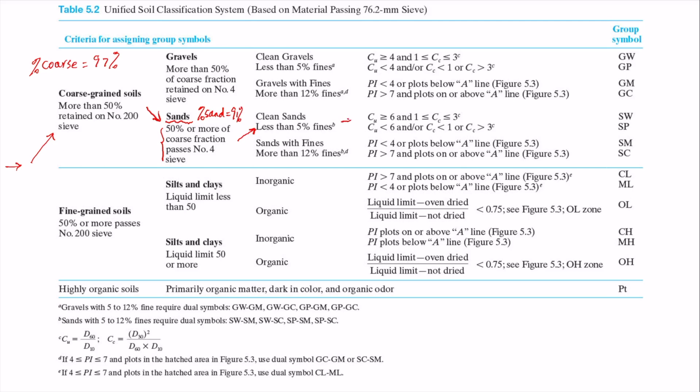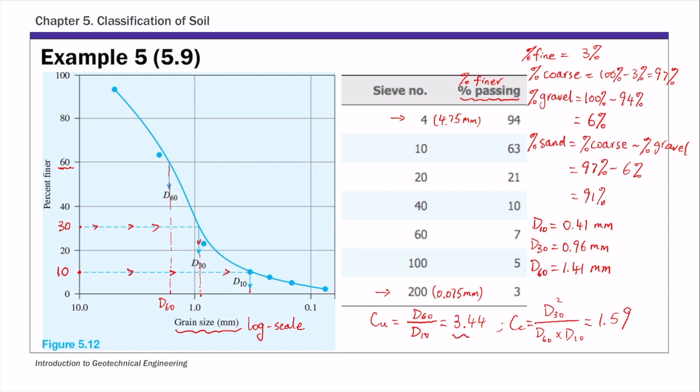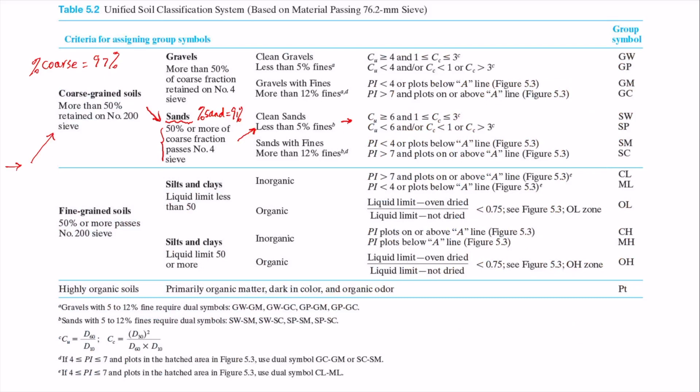And next is those two coefficients, Cu and Cc. For this soil, Cu is 3.44 and Cc is 1.59. So Cu in this case is smaller than 6, and the Cc value is between 1 and 3. But notice the condition is OR - as long as we meet one of these conditions, this soil is going to be classified as poorly graded soil. So the group symbol for this soil is SP.